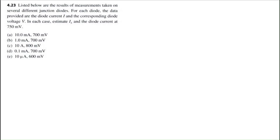Let's solve problem 4.23 for Microelectronics Circuits 8th edition by Sedgman Smith. Listed below are the results of measurements taken on several different junction diodes. For each diode, the data provided are the diode current I and the corresponding diode voltage V. In each case, estimate the source current IS and the diode current at 750 millivolts.